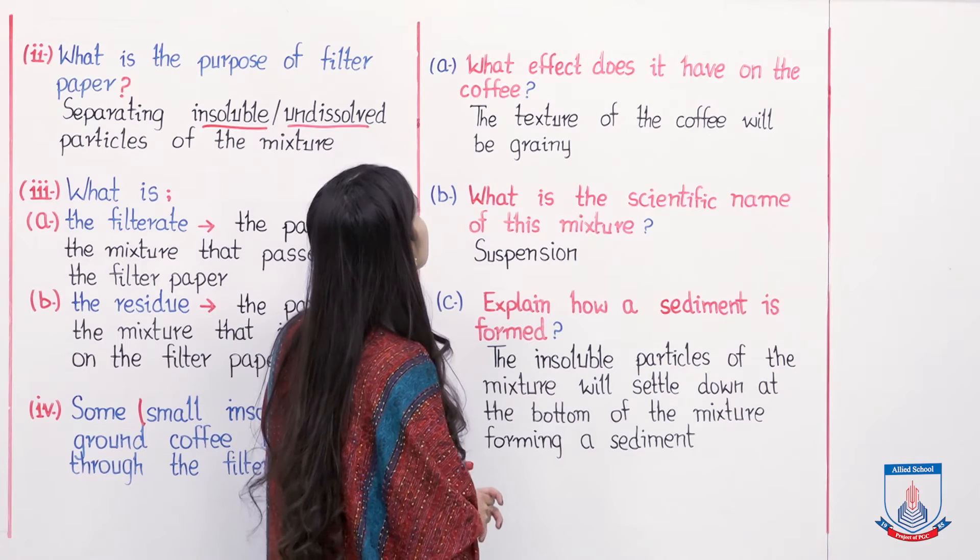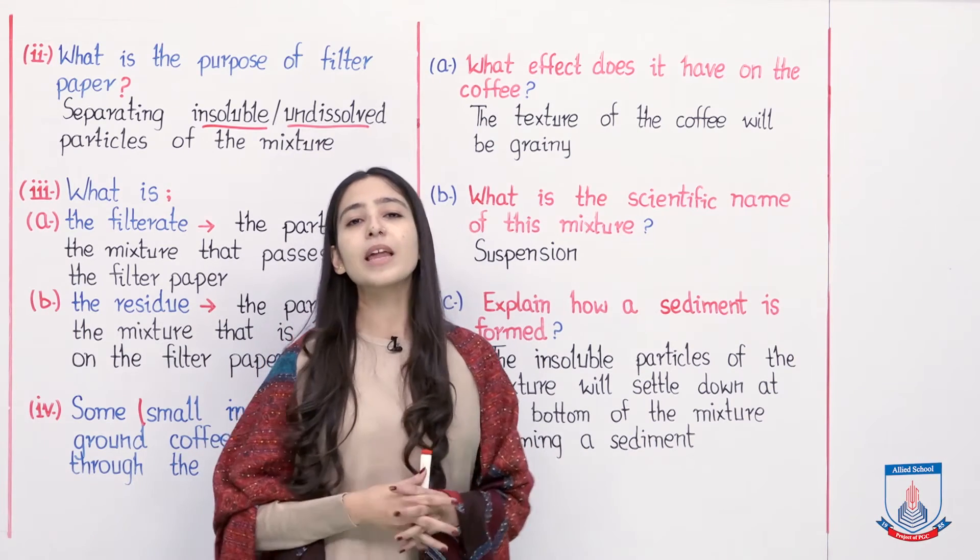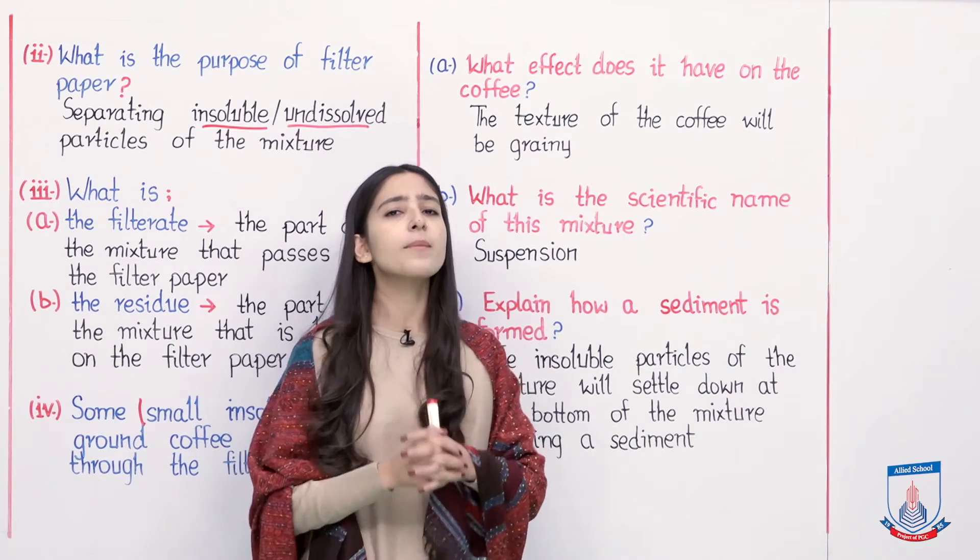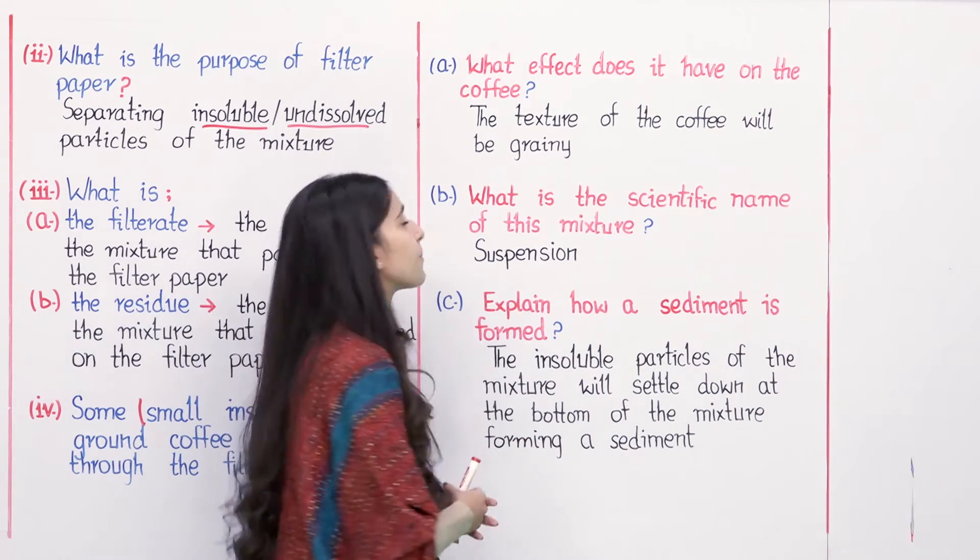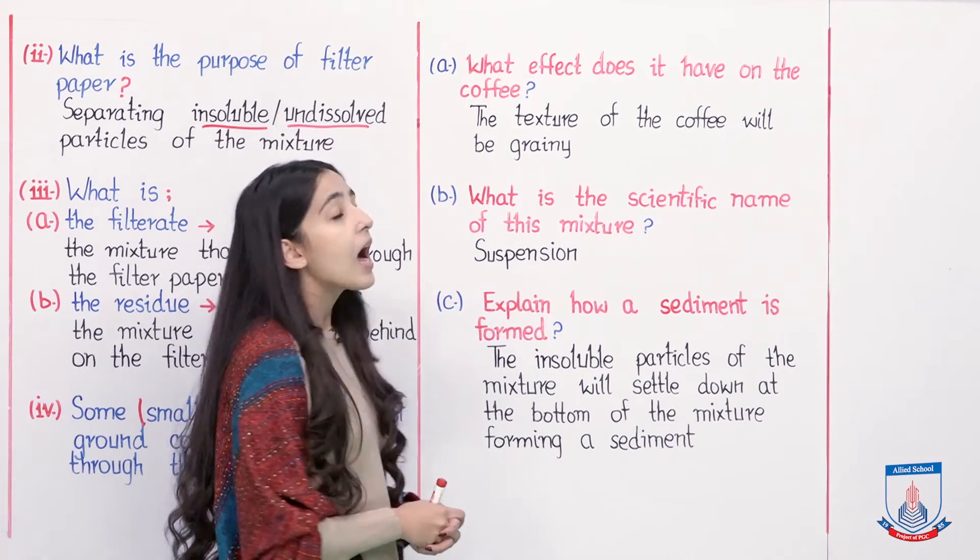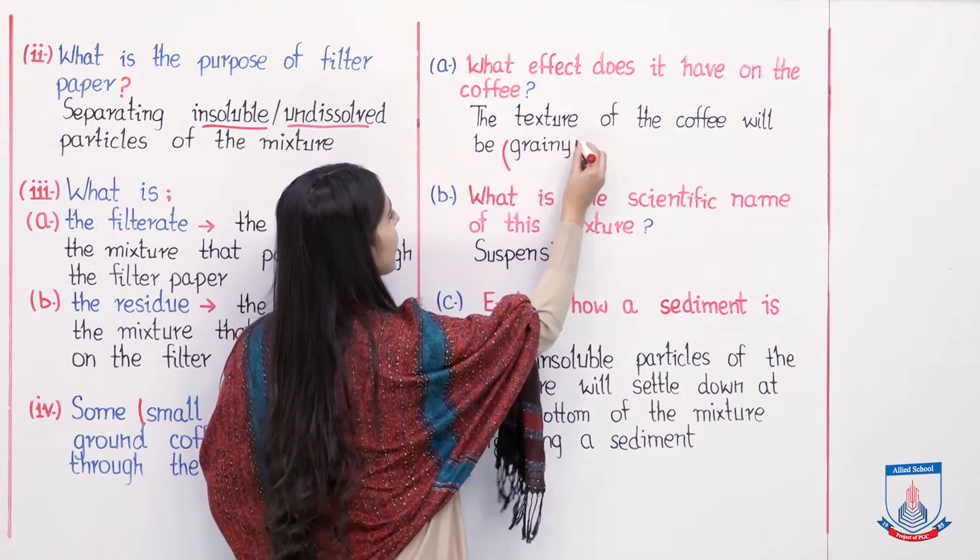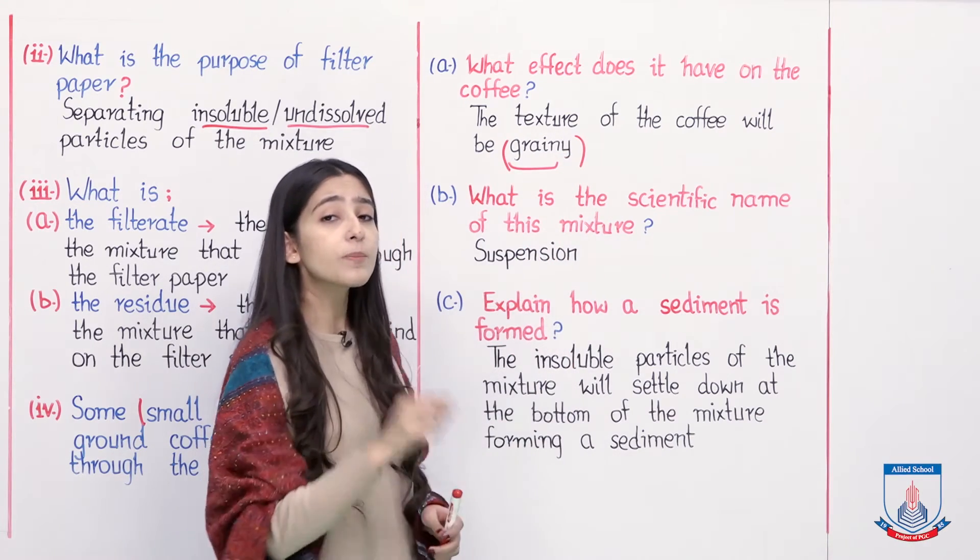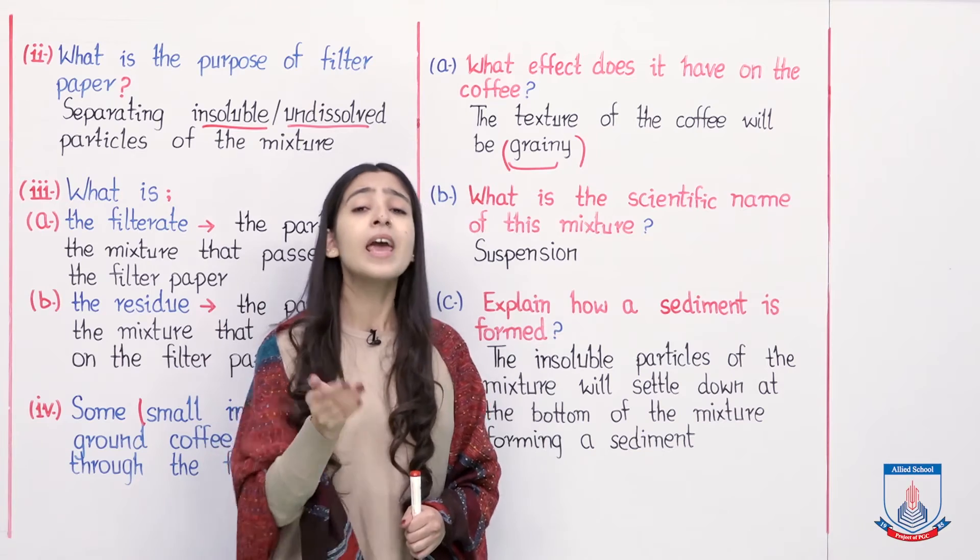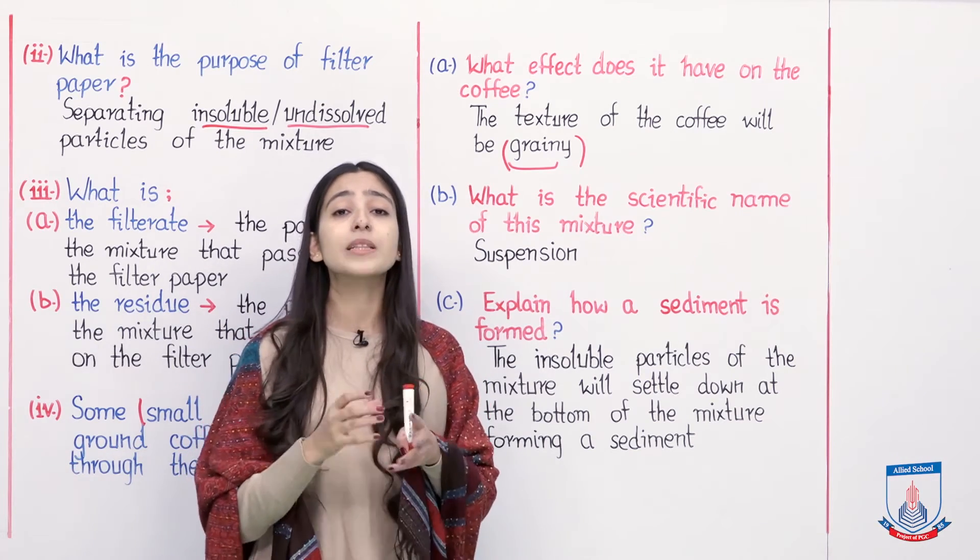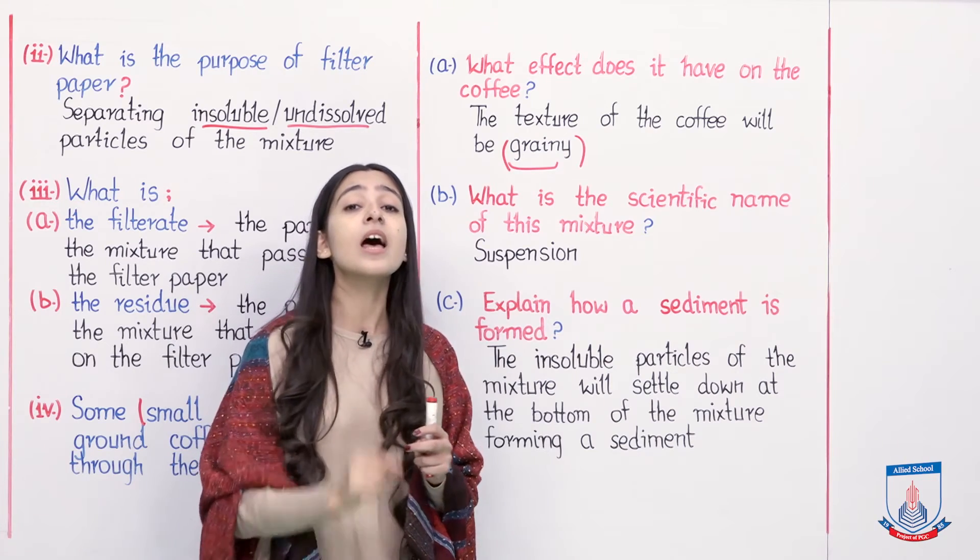The first question, part A, is: what effect does it have on the coffee? The texture of the coffee will be grainy. The texture of the coffee will not be smooth, it will be grainy. Grainy means it contains grains, small particles. The grains are the small particles that are stored in our water and are not dissolved with water.